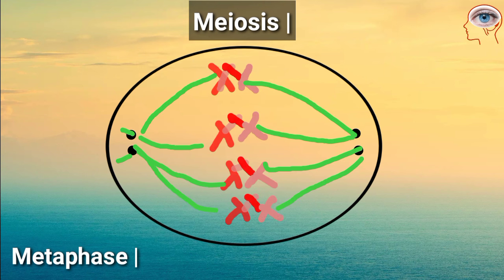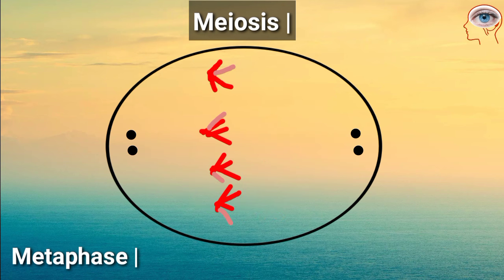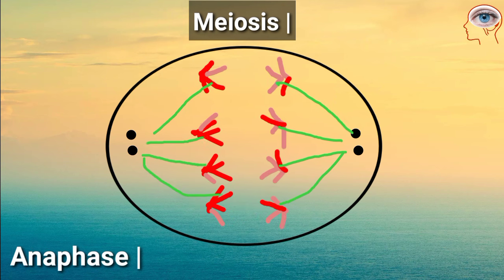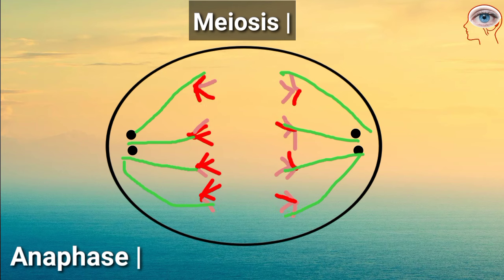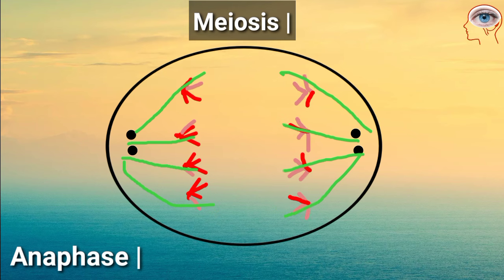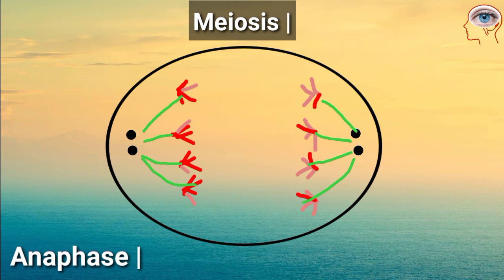In metaphase 1, pairs of homologous chromosomes align in the center of the cell. In anaphase 1, chromosomes are pulled toward one pole, and each chromosome still has its pair of sister chromatids.